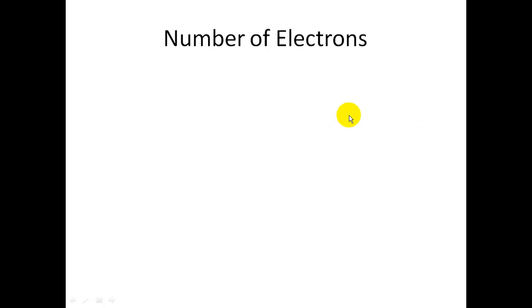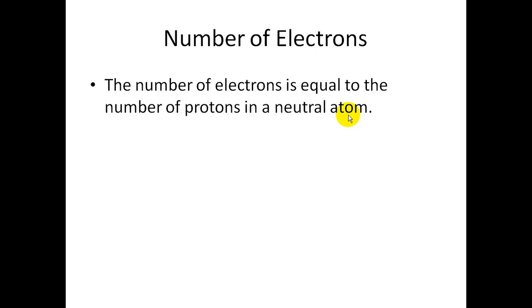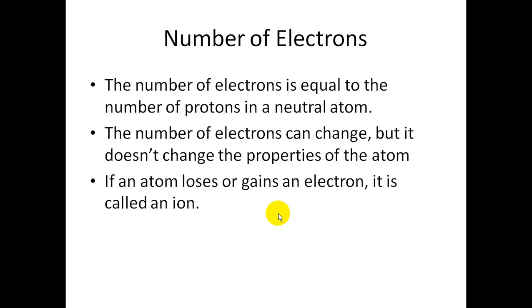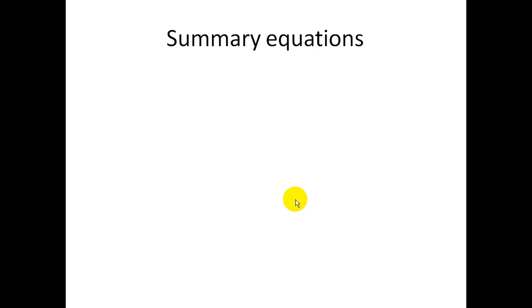How do I find out the number of electrons that an atom has? Well, the number of electrons is equal to the number of protons in a neutral atom. The number of electrons can change, like during a chemical reaction, but it doesn't change the properties of the atom. It'll still be carbon, for example. If an atom loses or gains an electron, there is a specific term for that. We'll get into that later. But, in general, it is called an ion. So, an ion is an atom that has gained an electron or lost an electron.